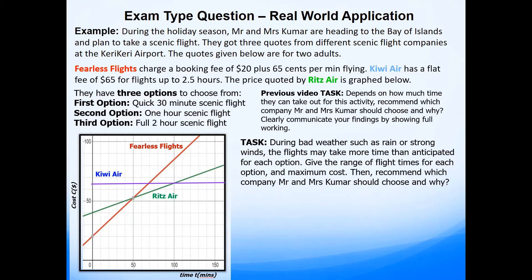For merit the task says that during bad weather such as rain or strong winds the flights might take more time than anticipated for each option. Give the range of flight times for each option including maximum cost. Then recommend which company Mr and Mrs Kumar should choose and give a reason why.